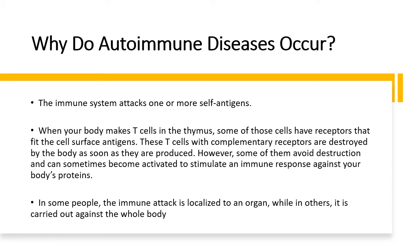In some people, the immune attack is localized to a certain organ, which means it's just in a certain part of the body. For example, in people who have rheumatoid arthritis, many people tend to have it around their legs, but some people also have it around their hands. It all depends on where these T cells are attacking the body's cells. In others, it can be carried out against the whole body, and that can be very, very debilitating.